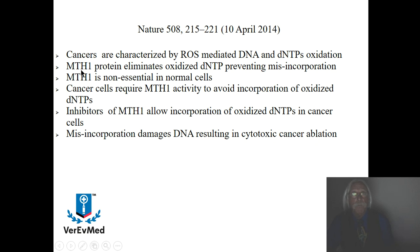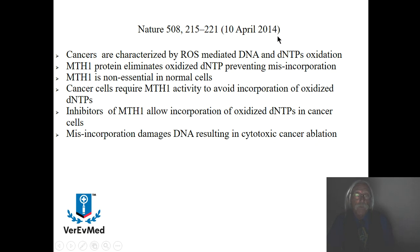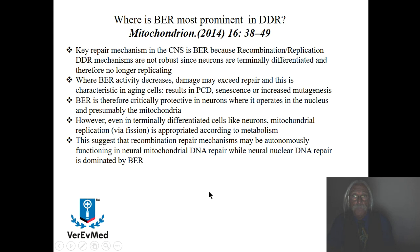Looking at MTH1 — before it was Lamin B1, and now we're talking about MTH1. Inhibitors of MTH1 allow incorporation of oxidized NTPs into cancer cells. If you inhibit that enzyme, even if you target it to just the cancer cell, since MTH1 is non-essential in normal cells, a person might show some signs from intoxication but won't die from it. So it selectively kills the cancer cells. This was published in a Nature paper in 2014.